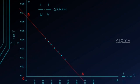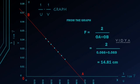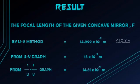Now, plot a graph with 1/u on the x-axis and 1/v on the y-axis, and calculate the focal length from the graph. It is obtained as 14.81 cm.